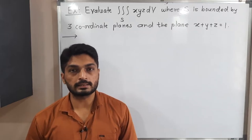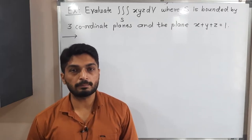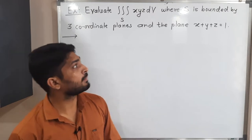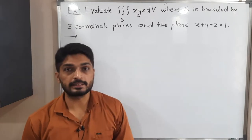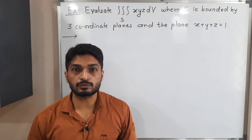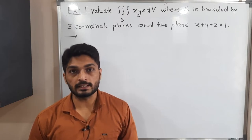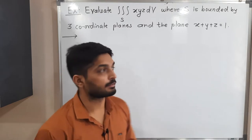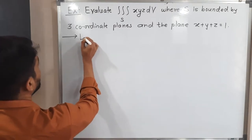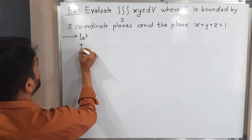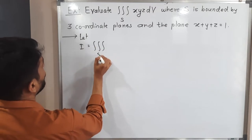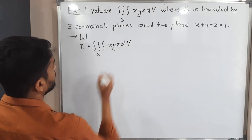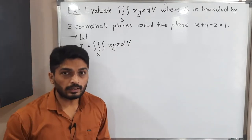Let us discuss this example. We have to solve a triple integration where the region is bounded by certain planes. Our main task is to find the limits of those integrals and by solving we will have the final answer. Let us write the given integral: I is equal to triple integration over region S of x·y·z dV.